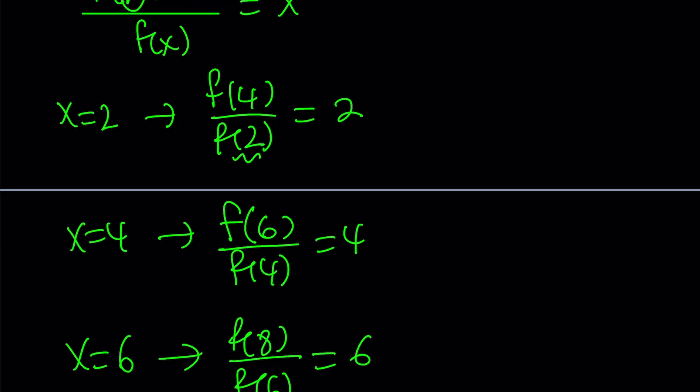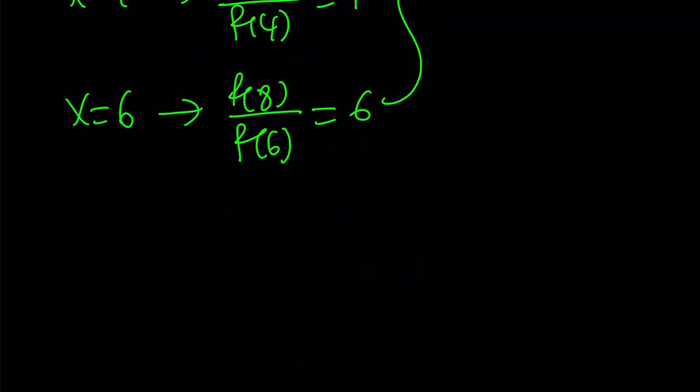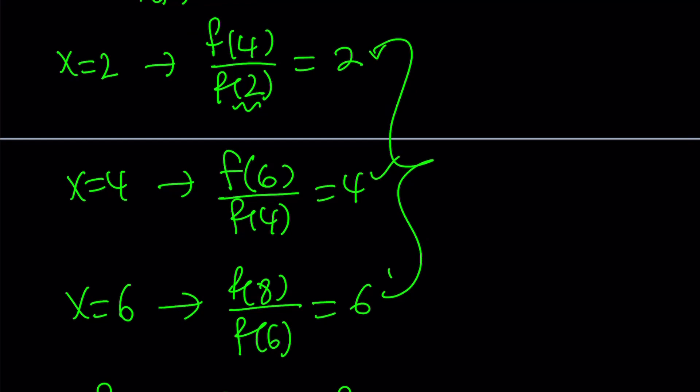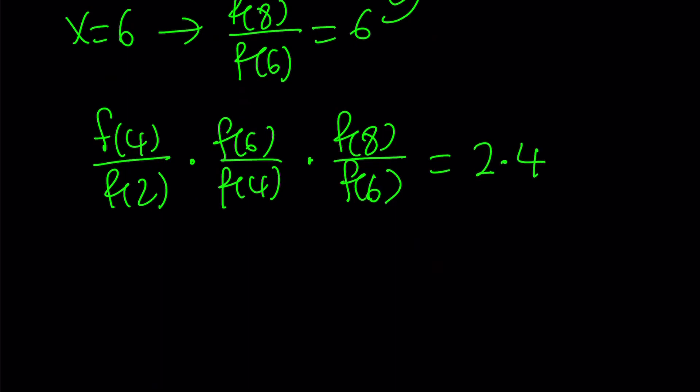But there's actually a better way to handle this as a system. Since I have these three ratios, why not put them together? In other words, multiply. Let's multiply f(4) over f(2) by f(6) over f(4), and that by f(8) over f(6). Now I do know that the values are 2, 4, and 6, right? From left to right. So this is going to be equivalent to 2 times 4 times 6. So that's nice. That is going to be 8 times 6, which is 48. But what about the left-hand side? Why did I multiply all these ratios? Because I can cancel them out.